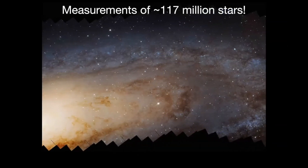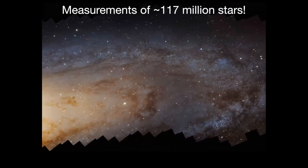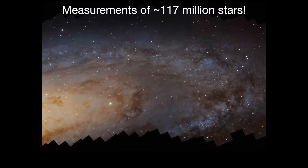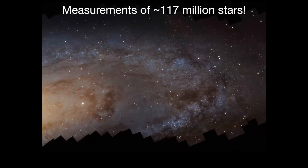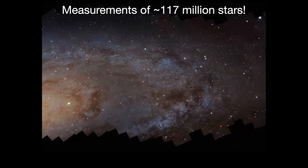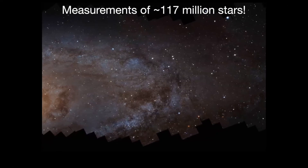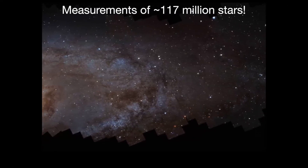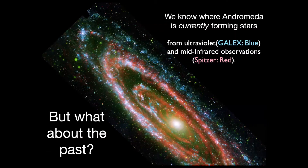The result is that we have measurements of the brightnesses for 117 million stars in Andromeda, making it one of the largest stellar catalogs in existence — certainly the largest in any very nearby galaxy. Now I want to describe some of the science that came out of the survey, because we didn't do this just to take a pretty picture of Andromeda, though it is really nice.